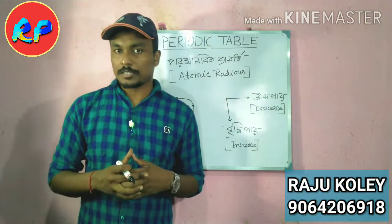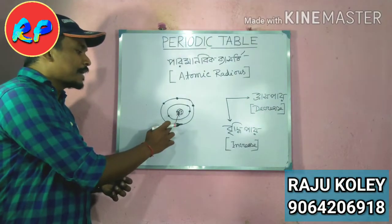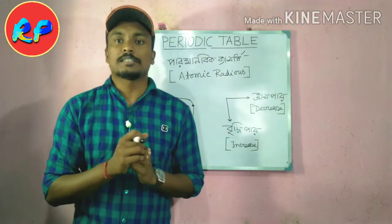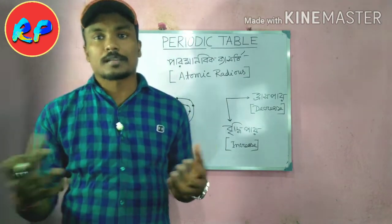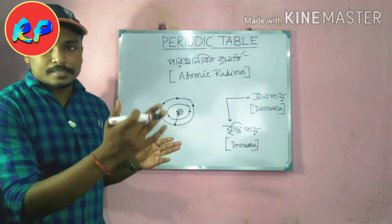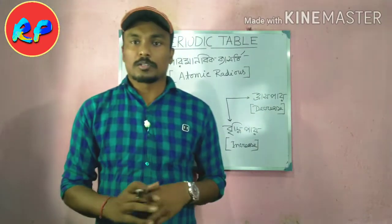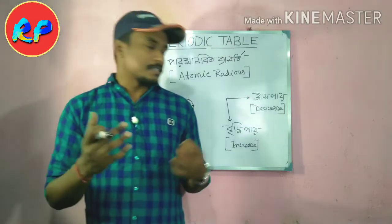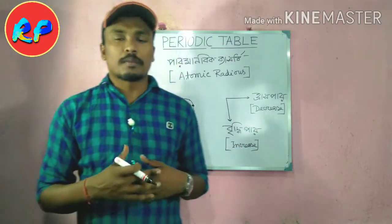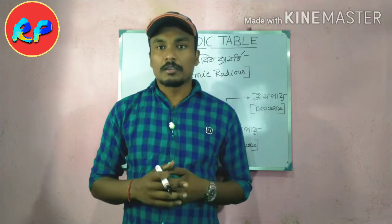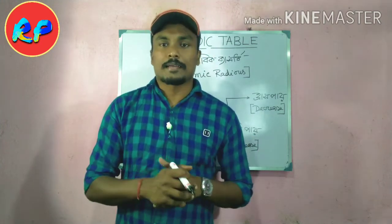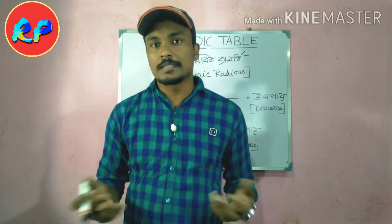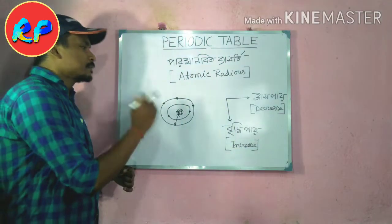The attraction power increases. This leads to contraction in size. The size decreases because the concentration — or attraction — power of the nucleus on the electrons increases. The more the protons, the more the nuclear charge, the greater the attraction power, and the greater the contraction in size. This is the reason for the decrease in atomic radius along a period.